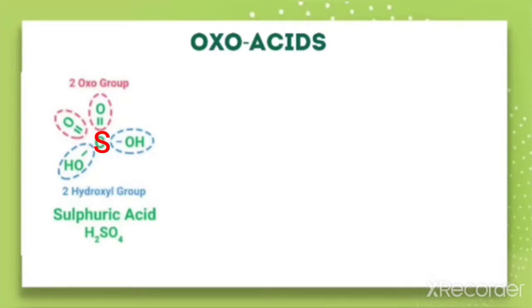Here two acidic protons are there. Both the acidic protons are with the hydroxyl group — that is the OH group — which is attached to the same element to which the oxo group is also attached, because here the two oxo groups and two hydroxyl groups are all attached to the same central atom, that is sulphur. So this is the definition for oxoacid.